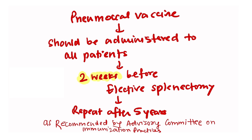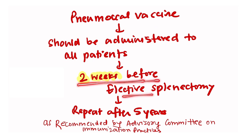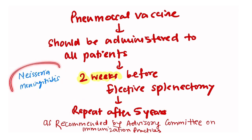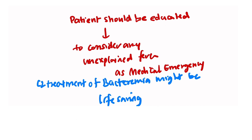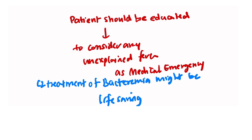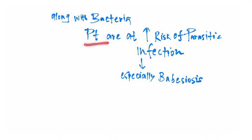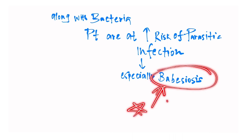Pneumococcal vaccine should be administered to all splenectomy patients two weeks prior to elective splenectomy. Some advisory committees recommend a booster dose after five years. These patients should also receive vaccination for Neisseria meningitidis. Post-splenectomy patients should be educated to consider unexplained fever a medical emergency, as treatment of bacteremia might be life-saving. Routine chemoprophylaxis with penicillin is not recommended. These patients are also at increased risk of parasitic infections, especially babesiosis.